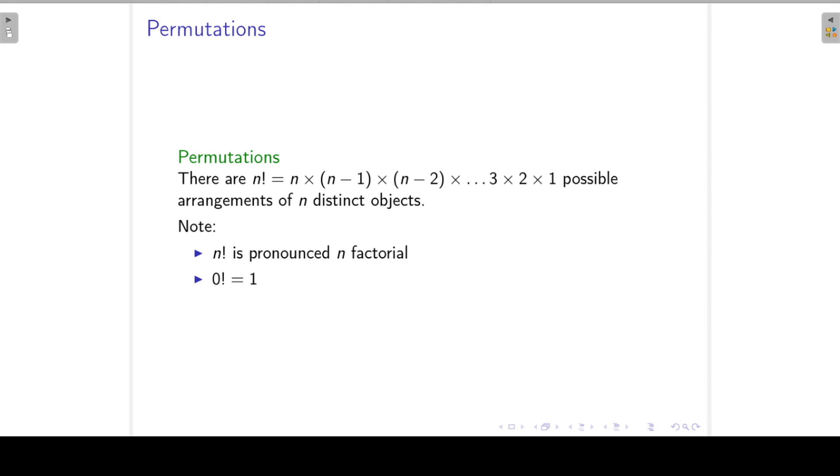So this is then permutations. There are n factorial possible arrangements of n distinct objects. Just see the note here, that n exclamation is pronounced as n factorial. And then by definition, zero factorial is equal to one. So to answer our original question of the five students, they can be ordered in five factorial different ways. So that is five times four, times three, times two, times one and that is equal to 120.